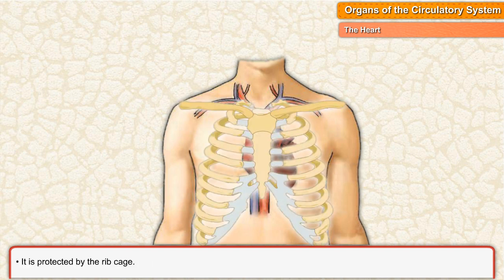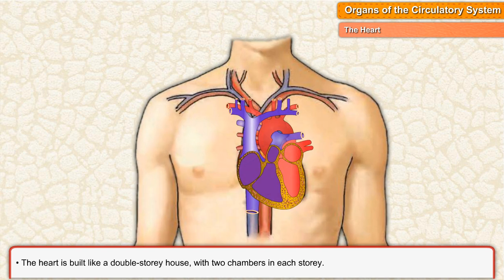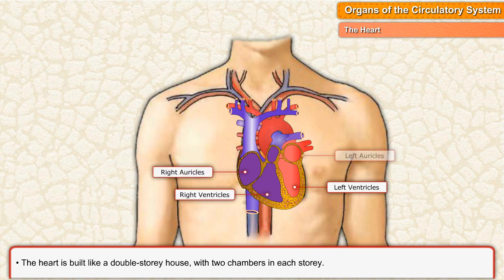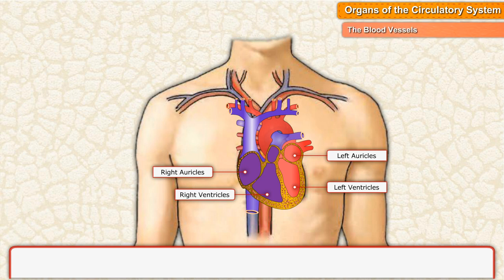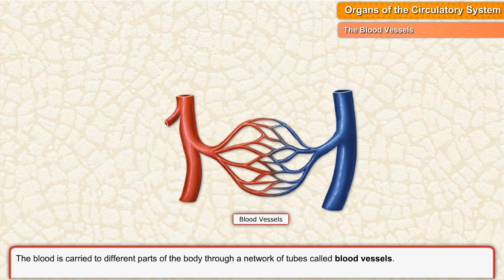The heart is protected by the ribcage. It is built like a double-story house with two chambers in each story. On the lower side there are the right and left ventricles, and on the upper side there are the right and left auricles.